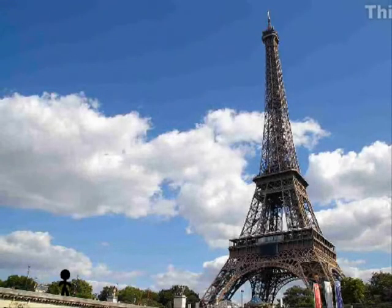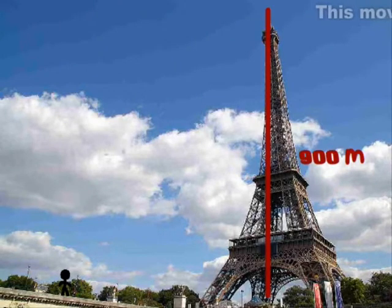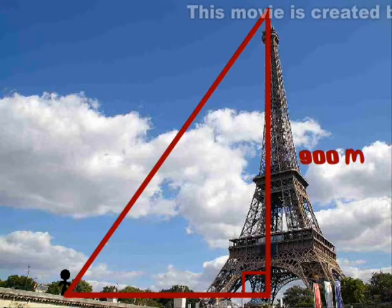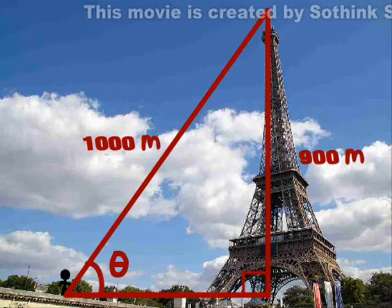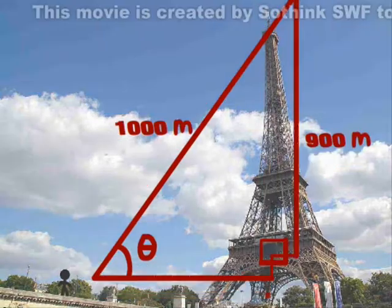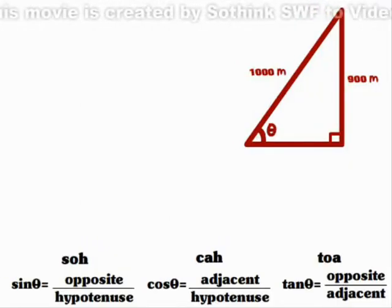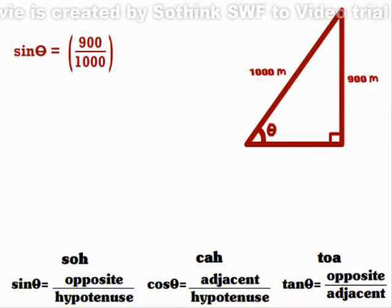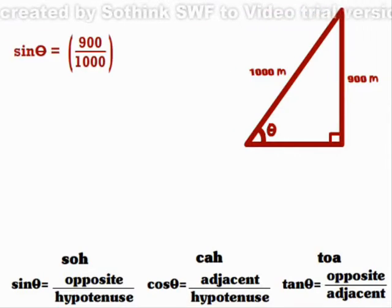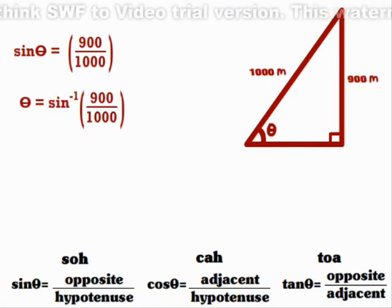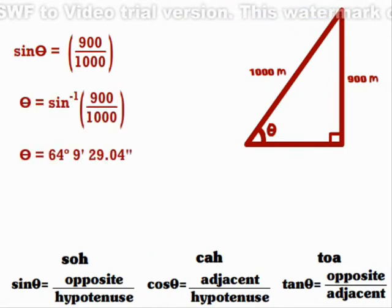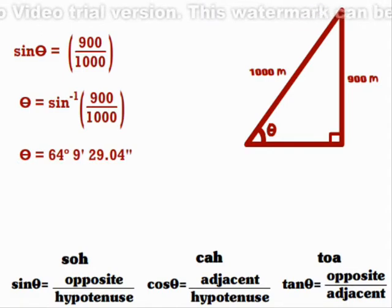The Eiffel Tower stands at an approximate height of 900 meters. If a man standing a distance away from the tower holds a 1,000-meter rope to the tip of the Eiffel Tower, find the angle the rope makes with the ground. Here we can apply SOH-CAH-TOA — particularly sine of theta equals the measurement of the side opposite the angle over the measurement of the hypotenuse. Using a calculator, theta equals 64 degrees, 9 minutes, and 29.04 seconds.